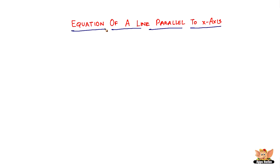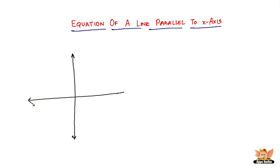In this video we're going to look into the equation of a line parallel to the x-axis. We have the rectangular coordinate axis here — that is the y-axis and the x-axis. This is the x-axis and this is the y-axis. Now we have to answer the question: what is the equation of a line that is going to be parallel to the x-axis?